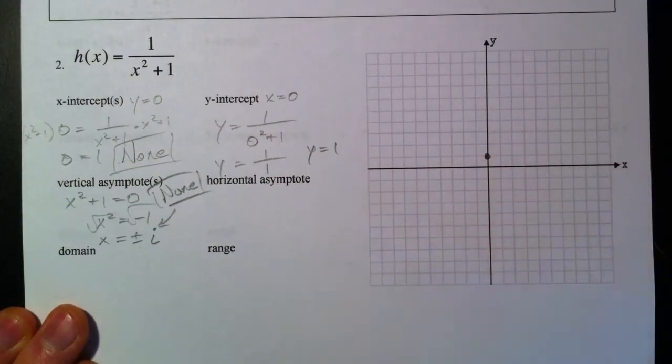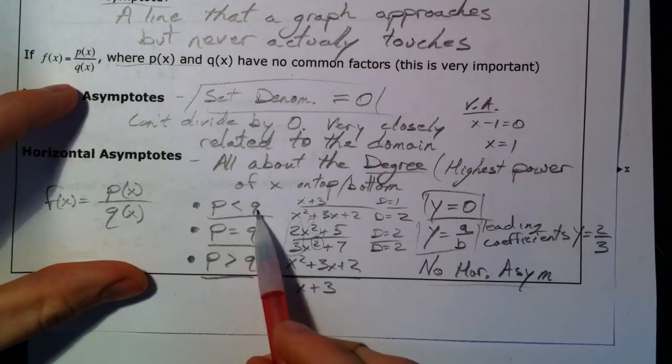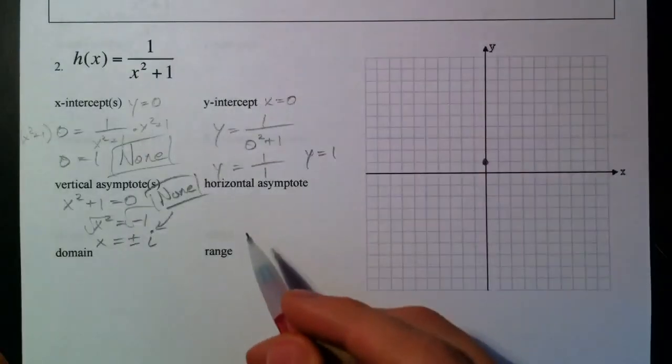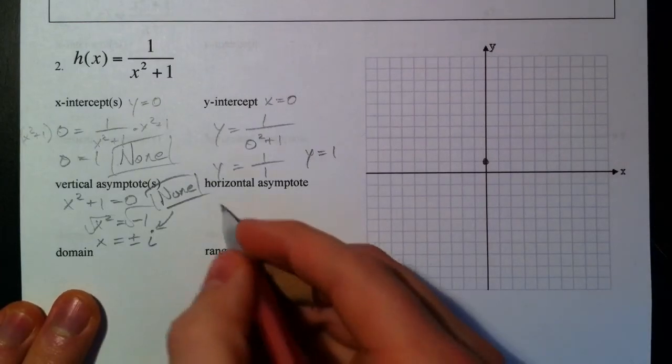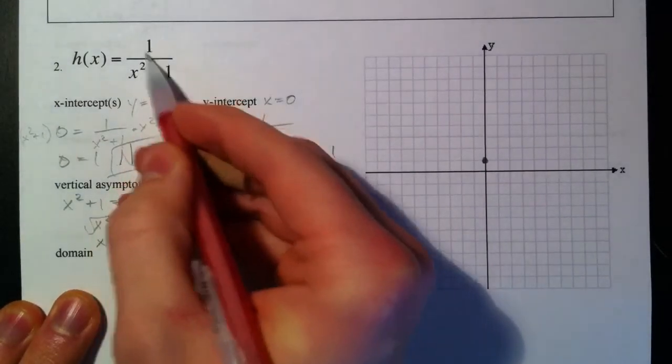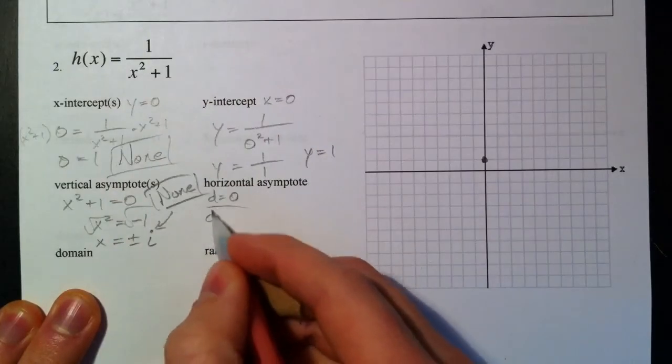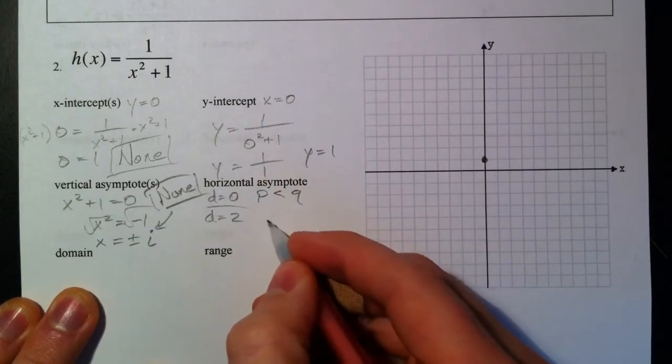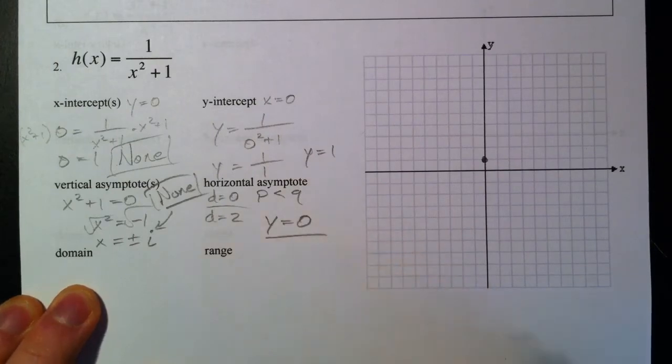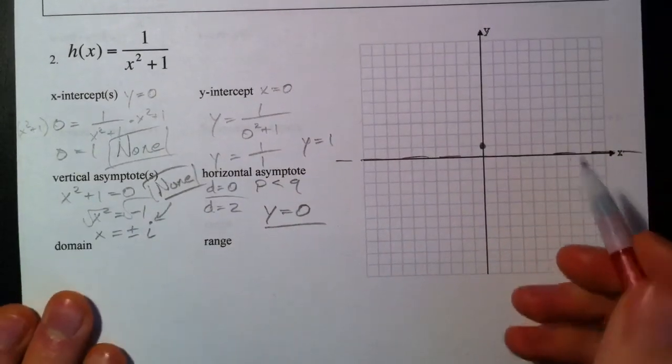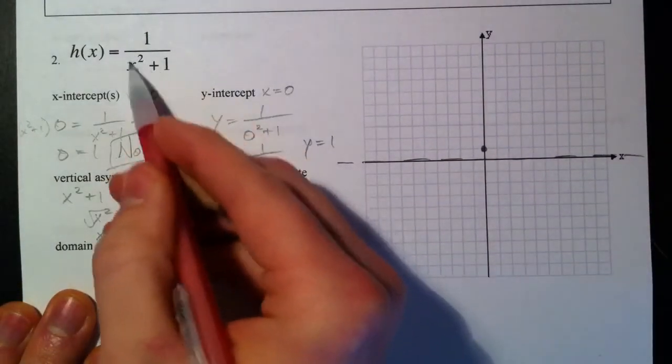So we're not going to have any vertical asymptotes. Onto horizontal asymptotes. Remember we had p is less than q, p is equal to q, p is greater than q. If the degree on top is less than the one on the bottom, that's what we have. Degree on top equals 0 because there is no x on top; the degree on the bottom is 2. So we have p is less than q because 0 is less than 2. So that's going to give us y equals 0. That's our first kind. So I'm going to draw in our horizontal asymptote at y equals 0 because again, get really huge numbers here, one divided by a really huge number is going to go to 0.